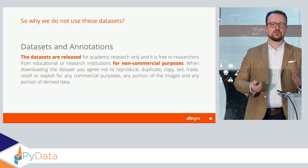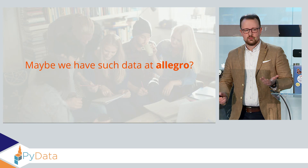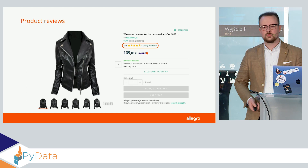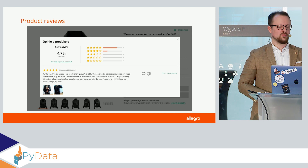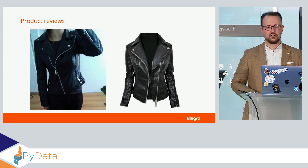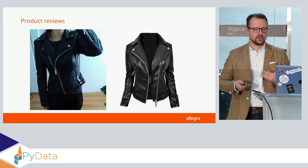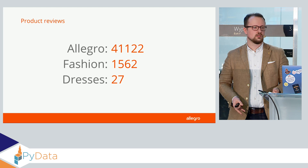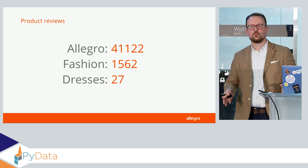If we cannot turn to something external, maybe we have the data already on Allegro. For example, we have a cool feature: product reviews. Our users like them, they write them quite often, and they post photos of the products they bought. This would be the perfect scenario — we get one nice shop-looking photo and then another one taken in a more natural environment by the user. But while on all of Allegro we have 41,000 such pairs, for dresses we have just 27. And as you all know, 27 is not enough to train a neural network.